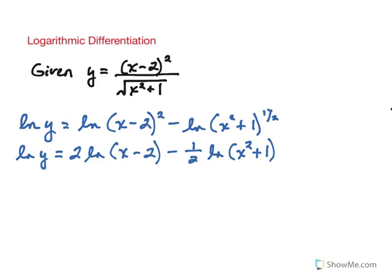Now we're ready to use implicit differentiation to find the derivative. This is why we use natural log — the derivative of natural log is simply 1 over the expression times the derivative of the expression; it's a nice easy rule to use. The derivative of natural log of y on the left would be 1 over y times dy/dx. Remember with implicit differentiation, you're taking the derivative with respect to x, so any time you have a derivative of a y term, we insert dy/dx.